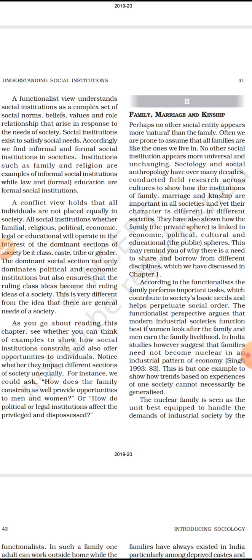If we look at social institutions from the conflict viewpoint, the conflict view holds that all individuals are not placed equally in society. There is one dominant class which exerts pressure on others. All social institutions — familial, religious, political, economic, legal, or educational — will operate in the interest of the dominant section of society, whether defined by class, caste, tribe, or gender. This dominant social section not only dominates political and economic institutions, but most importantly ensures that ruling class ideas become the ruling ideas of the society.